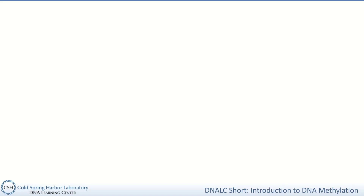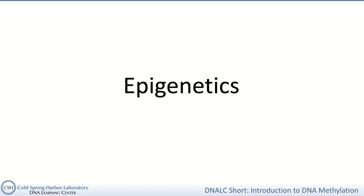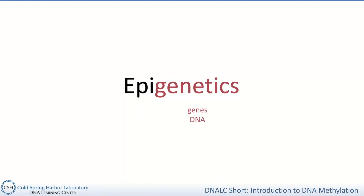Different cells with the same DNA can use that DNA, or follow the instructions coded in that DNA, in different ways thanks to something we study in the field of epigenetics. Epi refers to something being over or around, and genetics refers to DNA or genes. So epigenetics is the study of factors that occur sort of on top of DNA. These are not mutations, which are changes to the DNA itself, but changes that affect how that DNA is used.